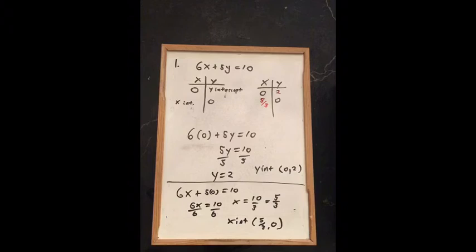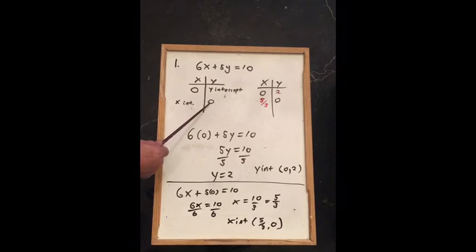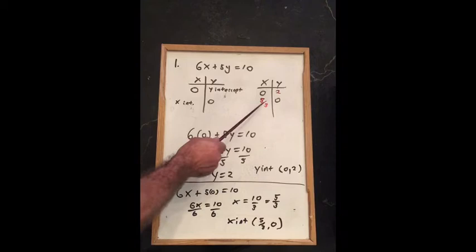For problem 1, we are given the equation 6x plus 5y equals 10. We need to find the x and y intercepts. The y-intercept is when you put in 0 for x, and the x-intercept is when you put in 0 for y. When you put in 0 for x, you get 2 for y, and when you put in 0 for y, you get 5 thirds for x.